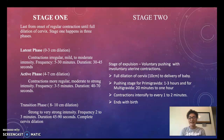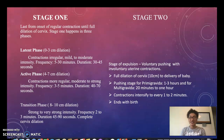The latent phase starts at zero to three centimeters dilation. In this phase contractions are irregular, mild to moderate intensity. They occur frequently around every 30 to 50 minutes and they last from 30 to 45 seconds.